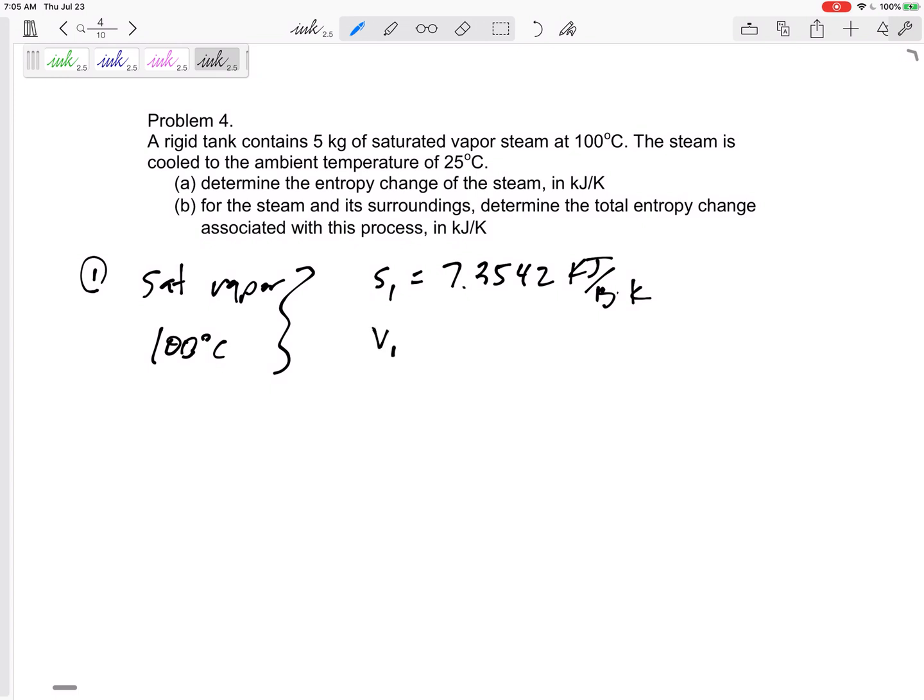Is there anything else that might be useful? Maybe while we're in the property table, I'm gonna go ahead and write down two things. I'm gonna write down the specific volume: 1.672, and the energy, internal energy: 2506.0 kilojoules per kilogram K. Maybe I'm gonna use them later on.